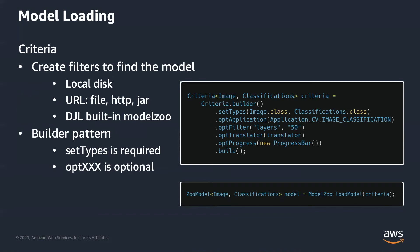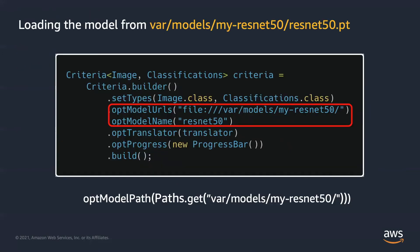It uses builder patterns and provides abundant filters to help you find the model. The load model method returns a zoo model which packages the model and translator. Here is a simple example to load the model from local disk. opt model URLs specifies the file path URL and opt model name specifies the model name. The opt model URLs can also be replaced by opt model path.